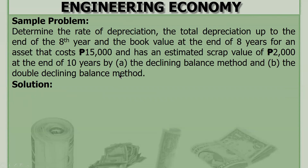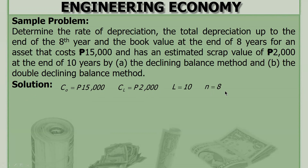Example problems. Determine the rate of depreciation, the total depreciation up to the end of the eighth year, and the book value at the end of eight years for an asset that costs 15,000 pesos and has an estimated scrap value of 2,000 pesos at the end of 10 years. Letter A: by the declining balance method, and B: the double declining balance method. Given: first cost 15,000, salvage value 2,000, life 10 years, and n equals 8.